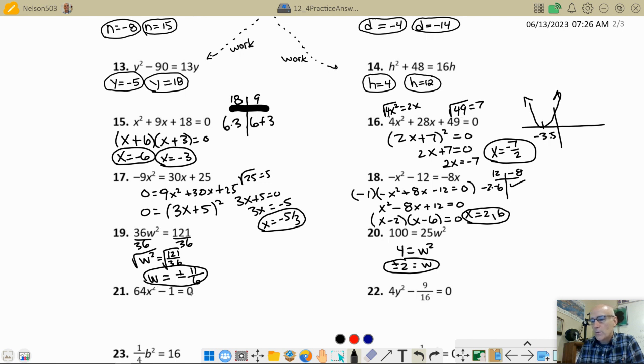x squared minus 1. Well, I'm going to do the same thing. I'm going to move the 1 to the other side. Divide by 64. I get x squared equals 1/64. I take the square root of both sides and I get plus or minus 1/8. Because I can take the square root of the 1, take the square root of 64.